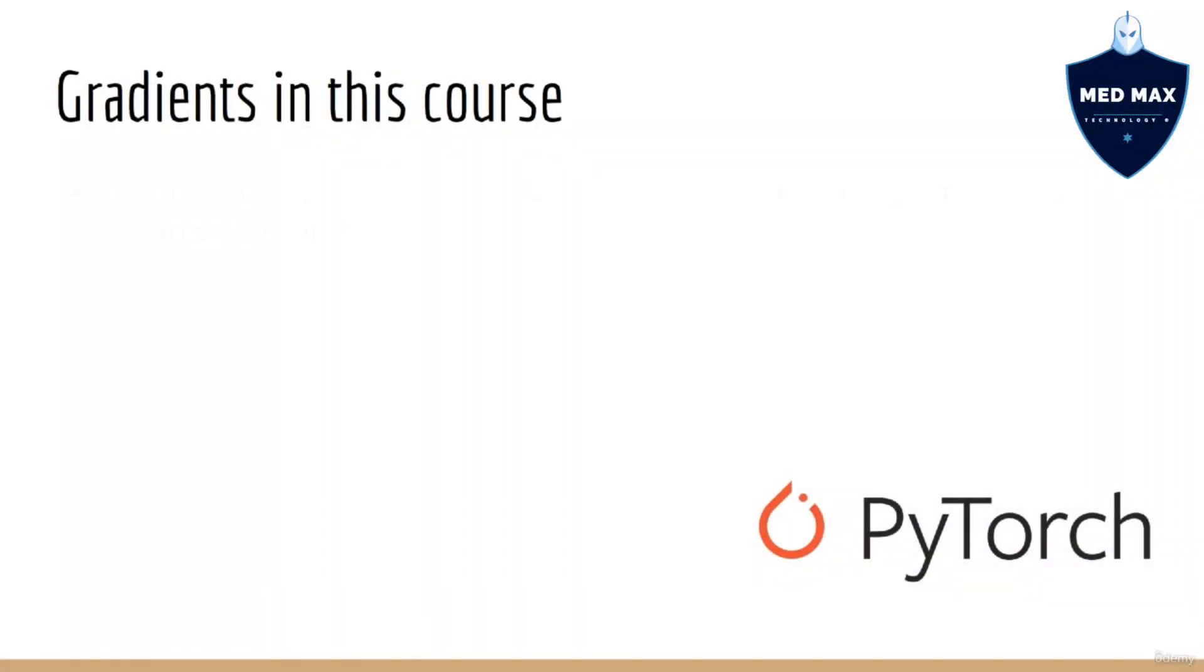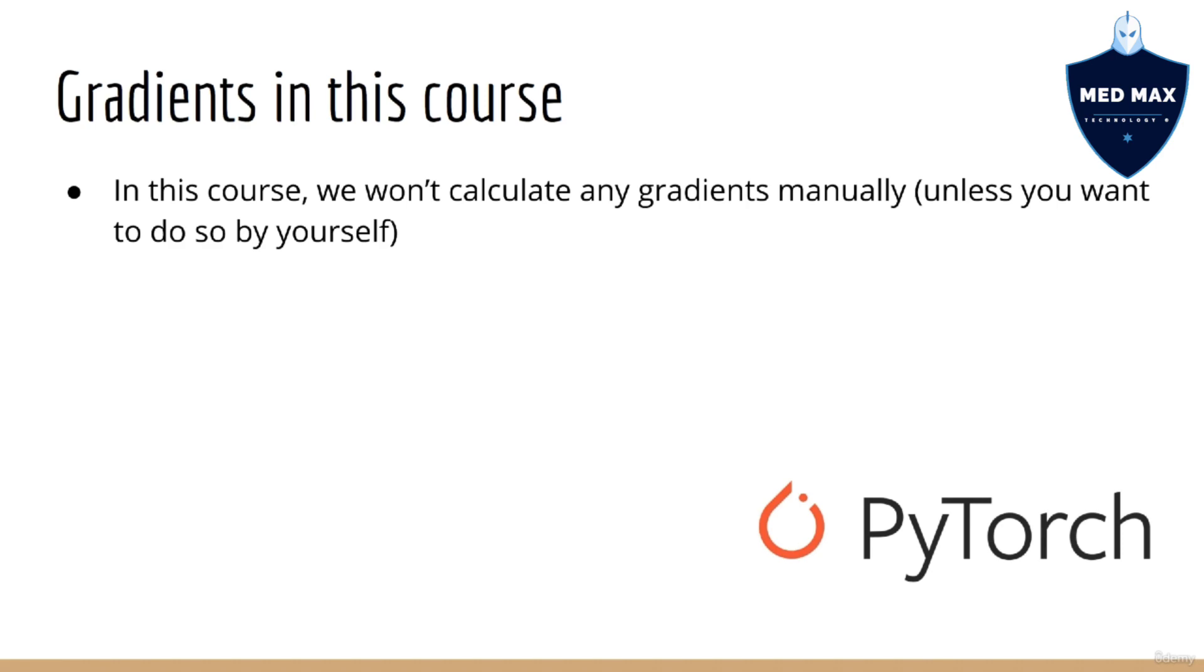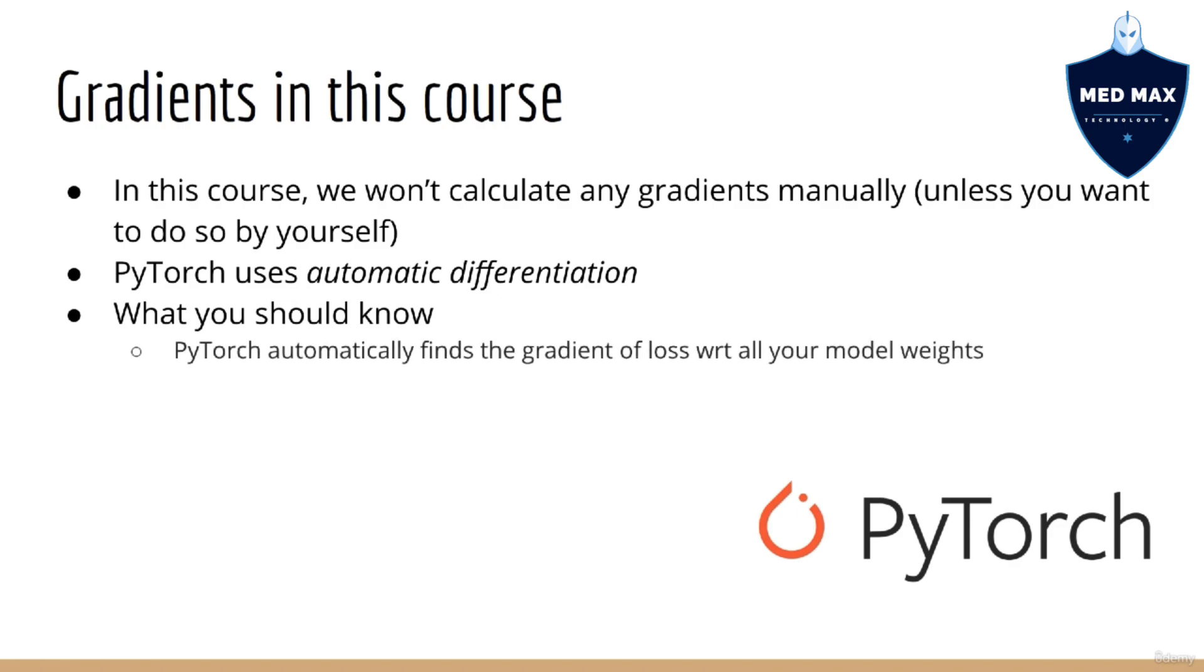Luckily in this course, we won't be calculating any derivatives manually, since I have many other courses which do that a lot. And by a lot, I really mean a lot. So in this course, we're kind of excused from doing that because PyTorch already does that for us using a process called automatic differentiation. Luckily you don't have to know how that works either because as its name suggests, it's automatic. So the only thing you really do have to know is that PyTorch is going to automatically find the gradient of all your weights, and PyTorch uses these gradients to train your model.